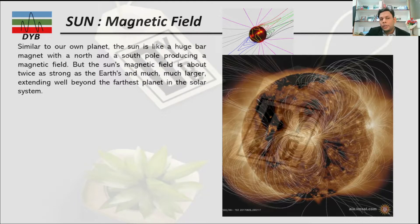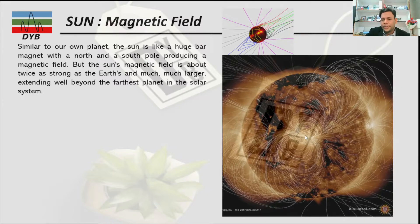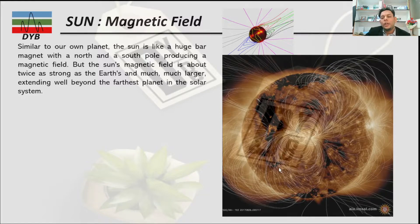Similar to our planet Earth, which has a magnetic field, the Sun also behaves as a large, powerful magnet with its north and south poles. But the Sun's magnetic field is about twice as strong as the Earth's and much larger — the magnetic field of the Sun can reach throughout the entire solar system.